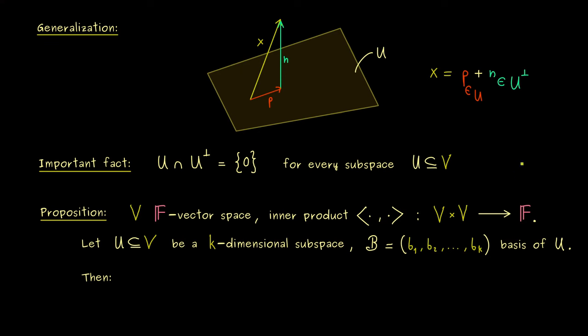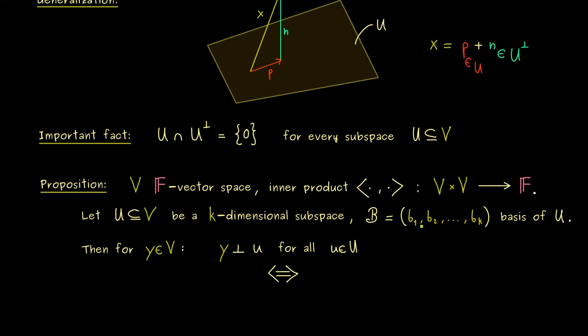And now it turns out, if we want to have a vector in the complement of U, we don't have to check the orthogonality with every element in U. It's sufficient to check it for the basis elements. So maybe let's say we have a vector y in V and then we can say the following. y is orthogonal perpendicular to each element in U if and only if y is orthogonal to each element b₁, b₂ and so on.